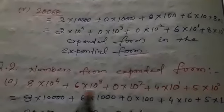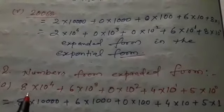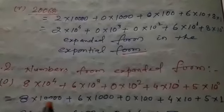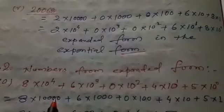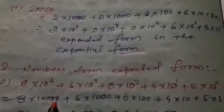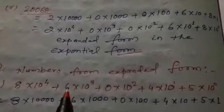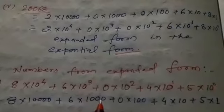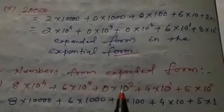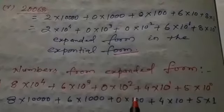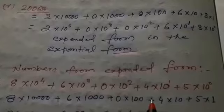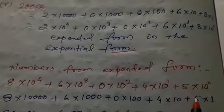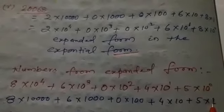First we simplify it. 8 × 10 to the power 4 means 10,000, so 8 × 10,000. Plus 6 × 10 to the power 3, which equals 1,000. Plus 0 × 10 squared, which means 100. Plus 4 × 10 to the power 1, which is 10. Plus 5 × 10 to the power 0, which is 1.